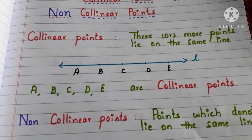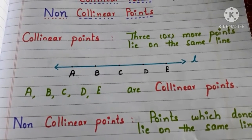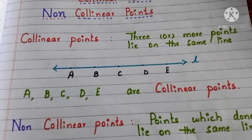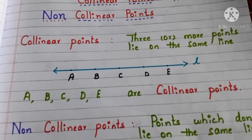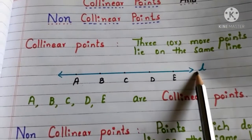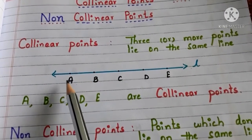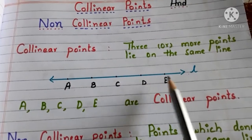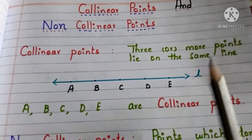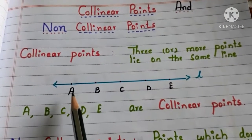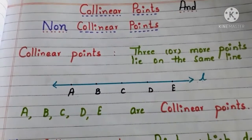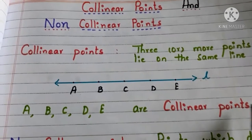First, we start with collinear points. If 3 or more points lie on the same line, then those points are said to be collinear points. Here we have a line L and the points A, B, C, D and E lie on the same line L. So, the points A, B, C, D and E are said to be collinear points.